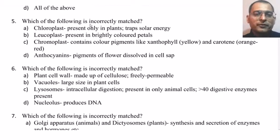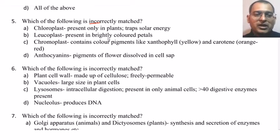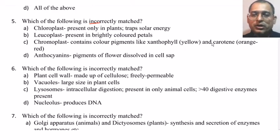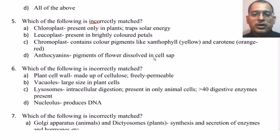Next question: which of the following is incorrectly matched? Chloroplast — present only in plants, traps solar energy; leucoplast — present in brightly coloured petals; chromoplast — contains colour pigments like xanthophyll (yellow) and carotene (red-orange); anthocyanins — pigments of flowers dissolved in the cell sap.